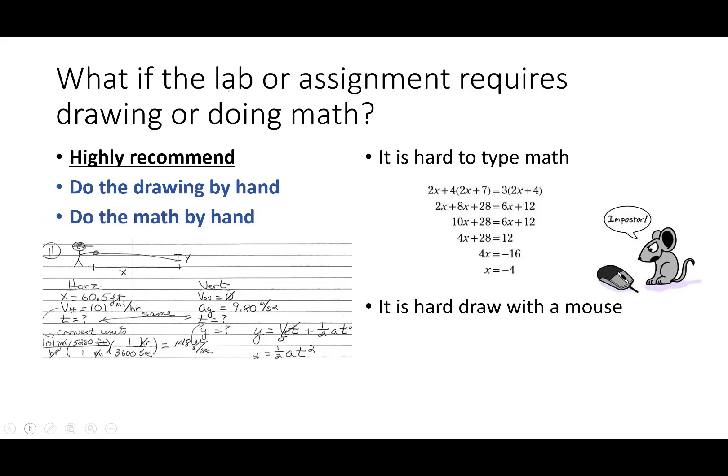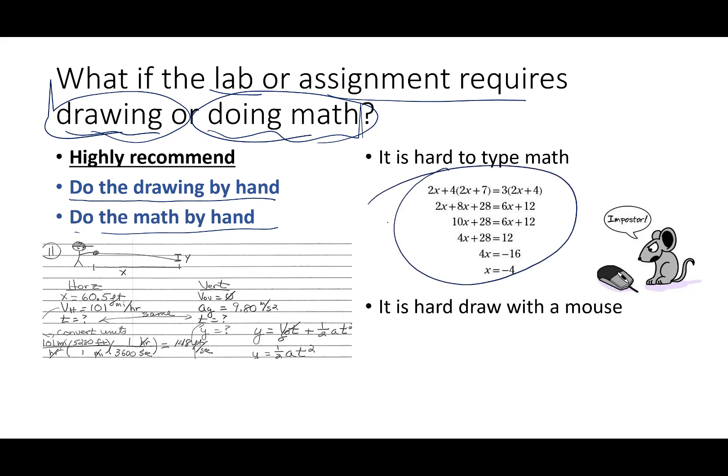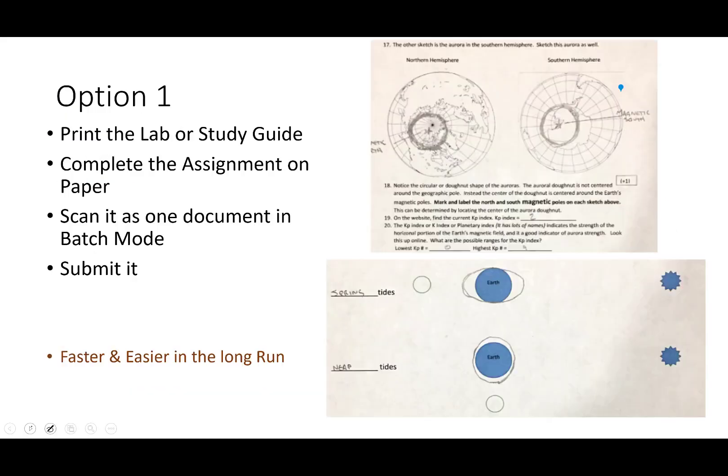What if the lab or the assignment you are doing requires that you have to do an awful lot of drawing or an awful lot of math? Physics, we're going to do a lot of math. Astronomy, we're going to do an awful lot of drawing. Now I highly recommend that you do the drawing and the math by hand. Why? It's hard to type math. I've taught science and physics for a long time. Yuck! This is yuck to type. It's yucky. And it is very difficult to draw with a mouse or try and do math on a screen with a mouse. It's going to look ugly no matter how you do it. So it is much easier, more intuitive. Your thoughts can flow more freely if you can do this on a piece of paper with your pencil or pen. So I recommend you do it on paper.